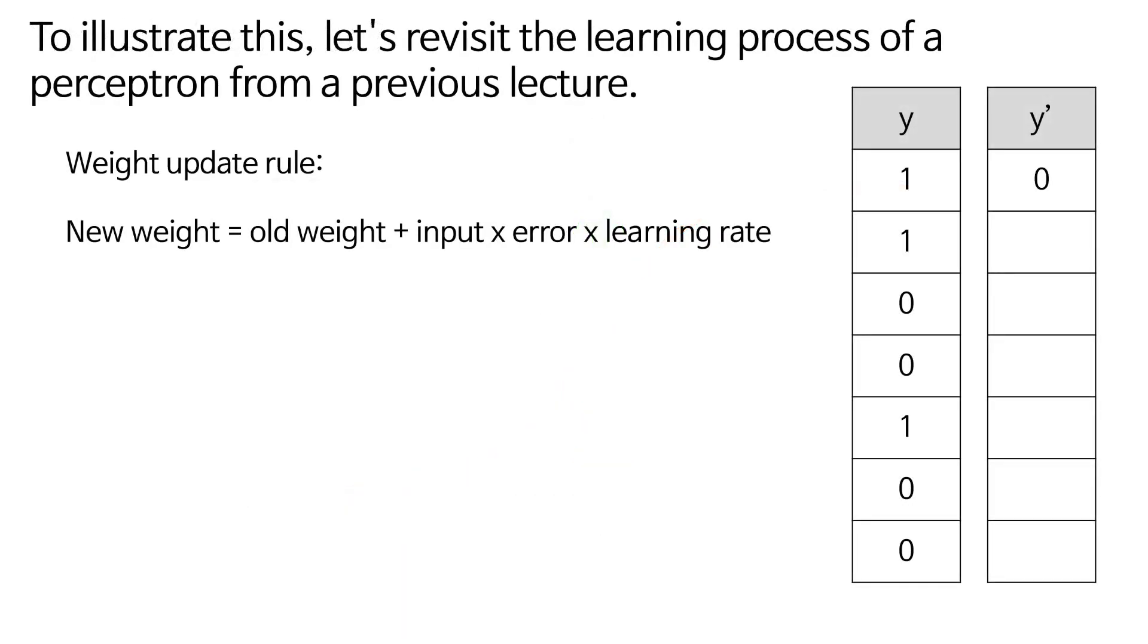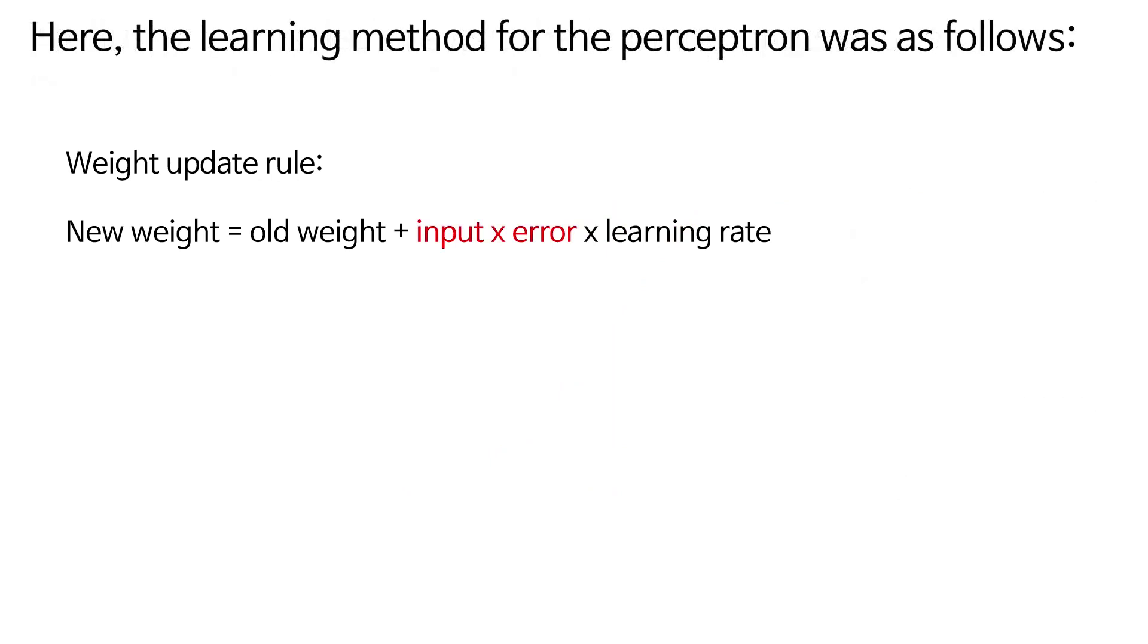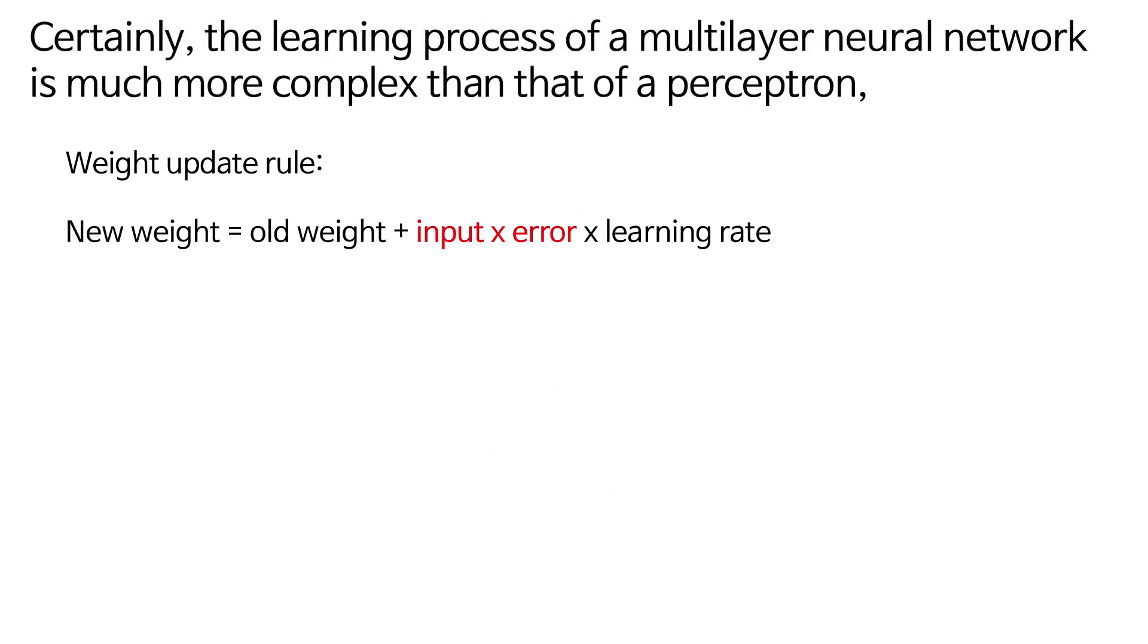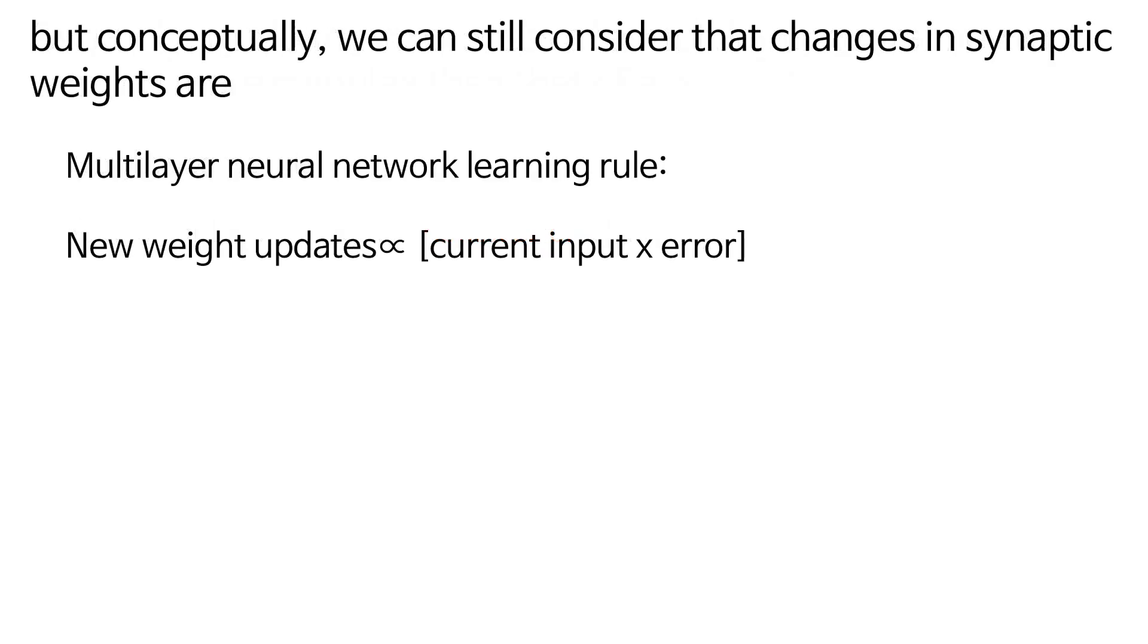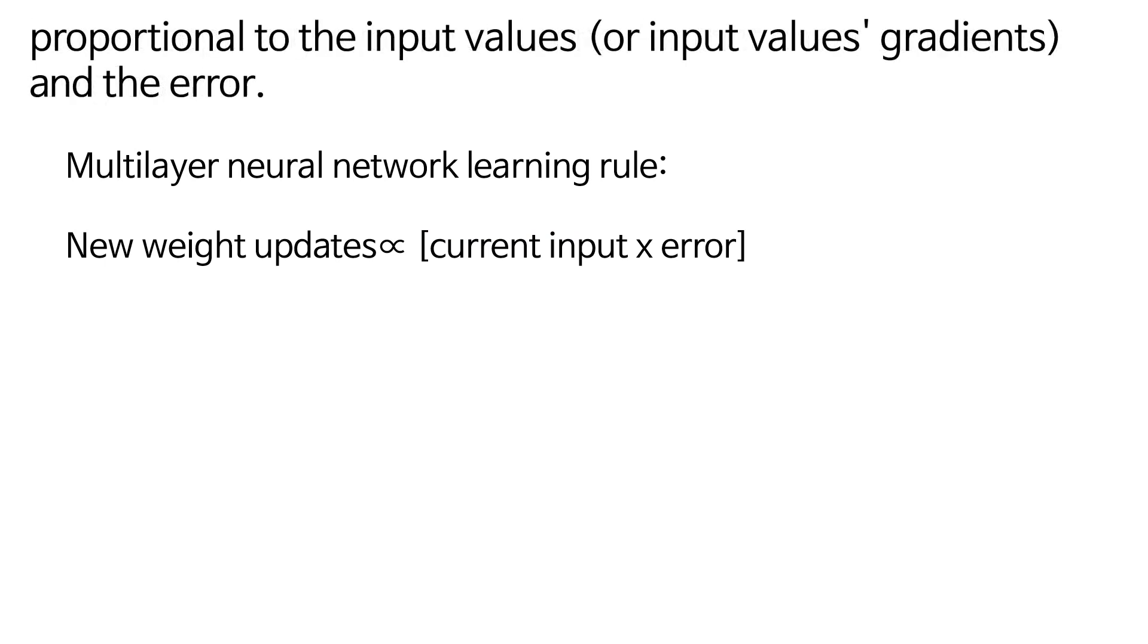To illustrate this, let's revisit the learning process of a perceptron from a previous lecture. Here, the learning method for the perceptron was as follows. Certainly, the learning process of a multilayer neural network is much more complex than that of a perceptron, but conceptually, we can still consider that changes in synaptic weights are proportional to the input values, or input values gradients, and the error.